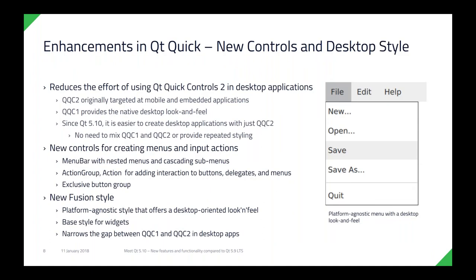There are yet more improvements in the QML area, and this is the last big thing on the QML side. Historically we have had two Qt Quick Controls to choose from: Qt Quick Controls 1, created for the native desktop look-and-feel, which is still used for that; and Qt Quick Controls 2, created for mobile and embedded applications. With this change, we're bringing those two much closer together. There is now a desktop fusion style available for Qt Quick Controls 2 developers, so you can make applications with a native look and feel with very low effort using that framework as well.